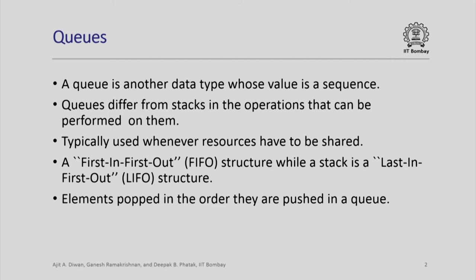Similarly, when you want to print a file, the printer uses a queue to store all the files that need to be printed. This is also what is called a first-in first-out structure, or a FIFO structure, where an element which enters the queue first will come out earlier. Whereas a stack is a last-in first-out structure — the element that entered the stack last will be the first one to come out. So in a queue, elements are popped in the order they are pushed.